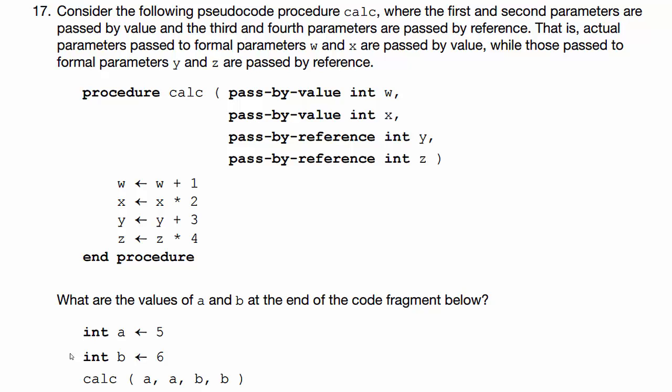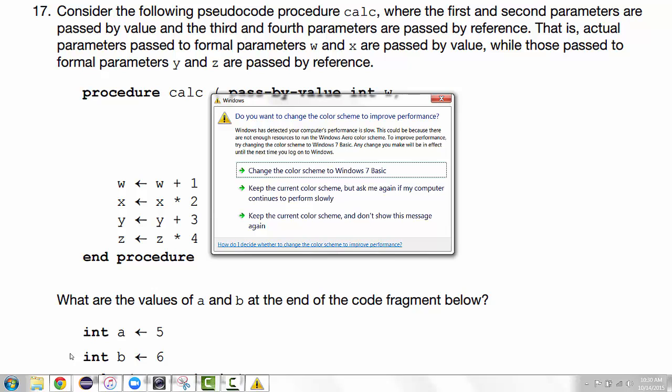I want to help you figure out how to unroll this question and questions of this type. So let's just read the question. Consider the following pseudocode procedure calc where the first and second parameters are passed by value and the third and fourth parameters are passed by reference. That is, actual parameters passed to formal parameters w and x are passed by value while those passed to formal parameters y and z are passed by reference.